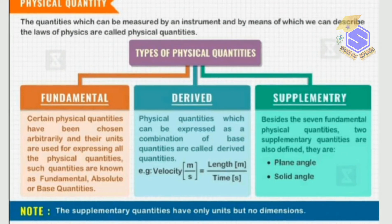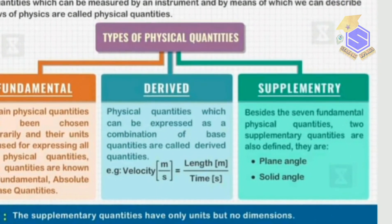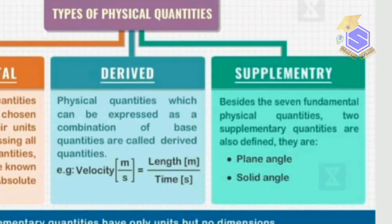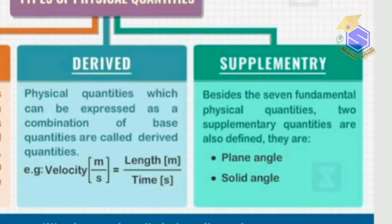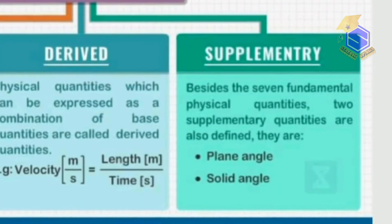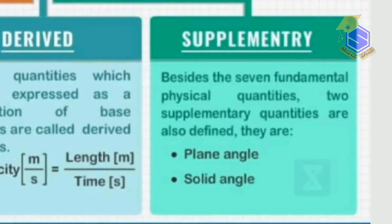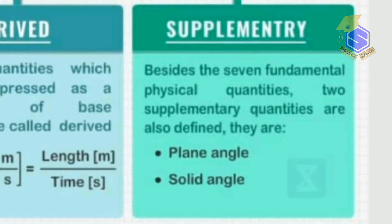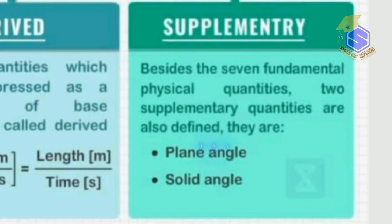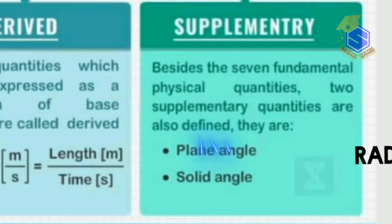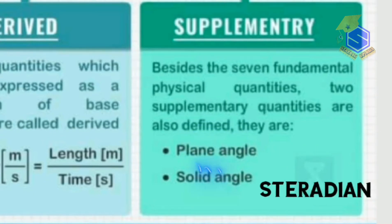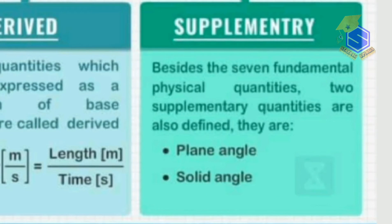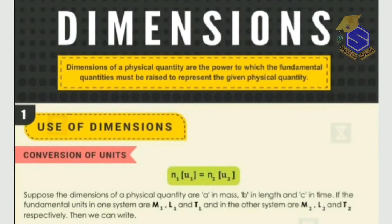The third type is supplementary physical quantity. Besides the seven fundamental physical quantities, two other quantities are categorized as supplementary physical quantities: plane angle and solid angle. Plane angle has the unit radian and solid angle has the unit steradian, represented by symbols rad and sr respectively.